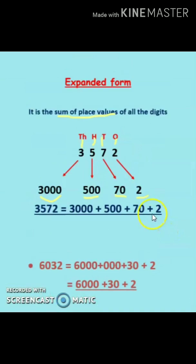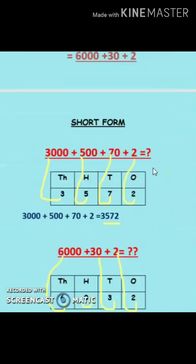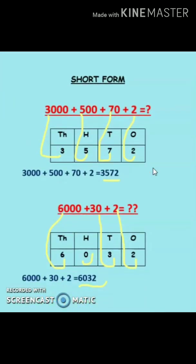So to summarize: expanded form is the sum of all the place values of all the digits, whereas in short form we are given the sum of all the place values and we have to write the number. Thank you.